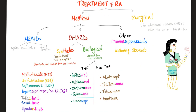Treatment of rheumatoid arthritis could be medical or surgical. Medical includes non-steroidals, DMARDs, or other immunosuppressants. DMARDs are synthetic or biological, and biological are TNF or non-TNF. We are here.